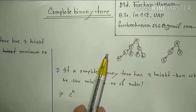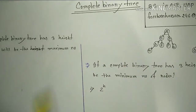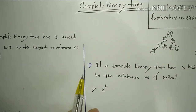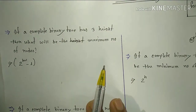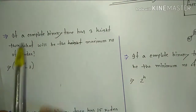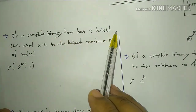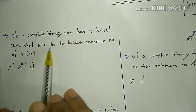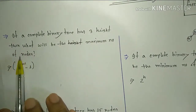In the previous video, we will see the formula. First question: if a complete binary tree has height 3, then what will be the maximum number of nodes?